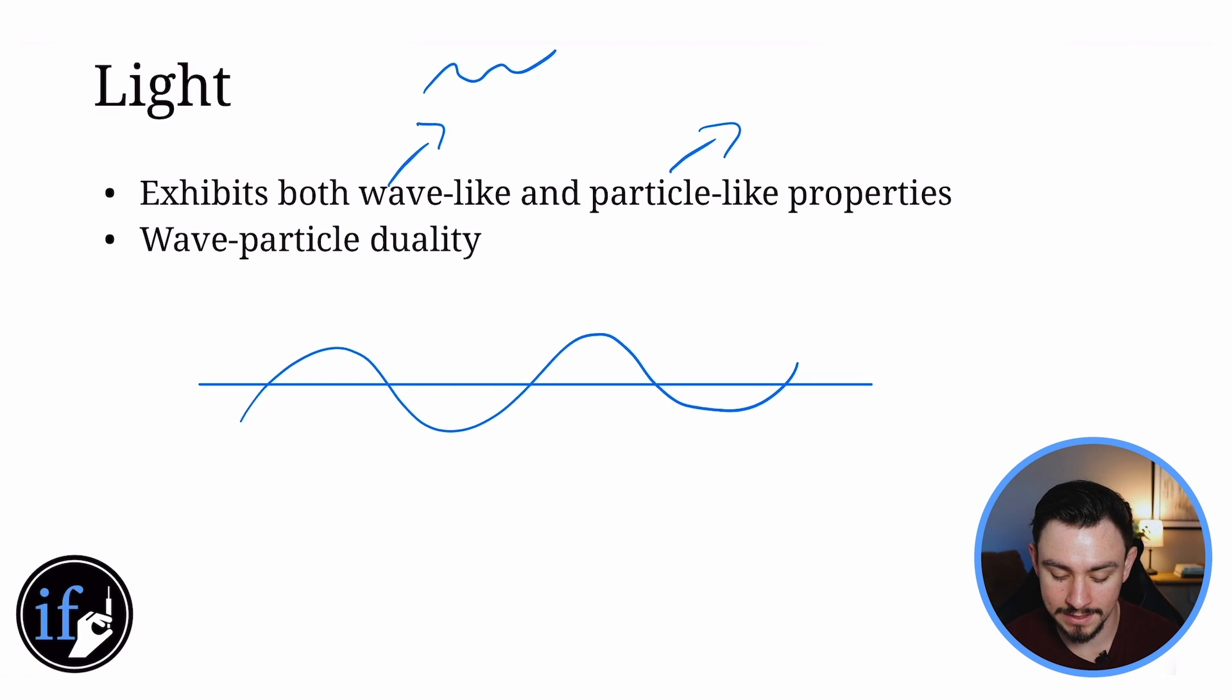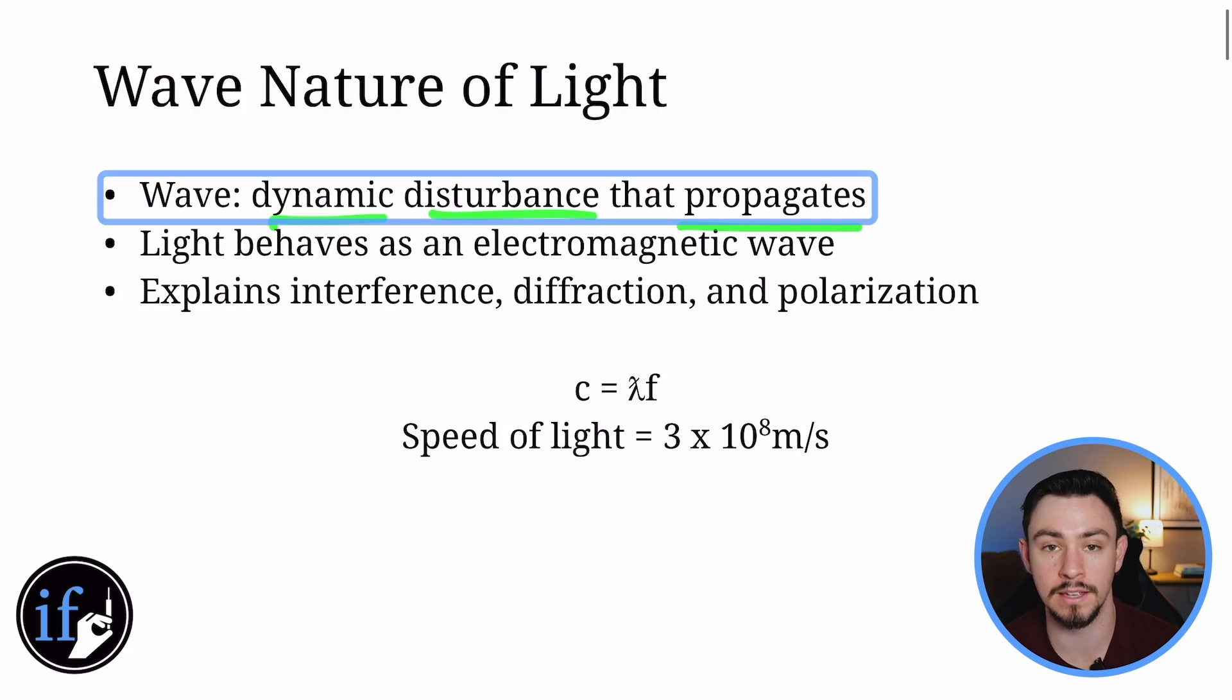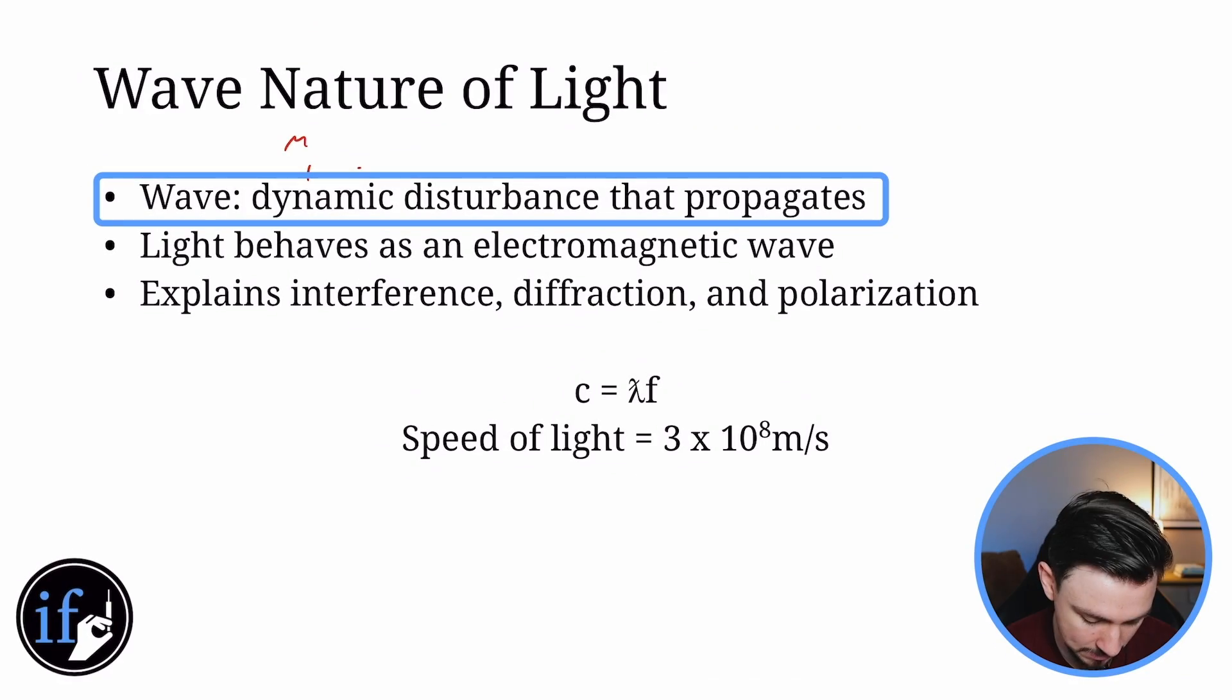So we discussed that light is both a wave and a particle. But what does it mean to be a wave? Well, that's what this slide is about. The wave nature of light. A wave in general is a dynamic disturbance that propagates. And you're probably like, what the F did you just say? Like, that's way too confusing. You're all over the place. So let's take each of these individually. Dynamic meaning it moves. It's constantly moving. Disturbance meaning it changes.